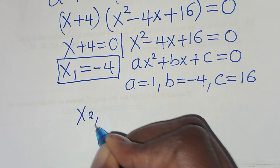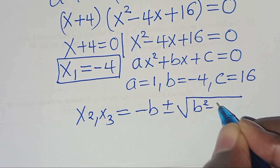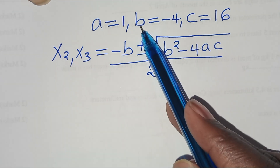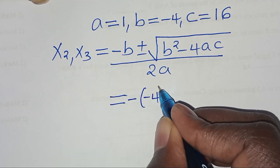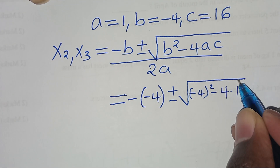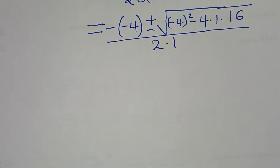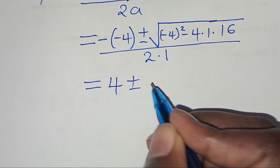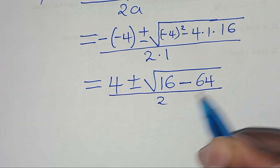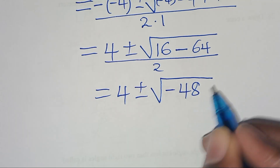To solve for x₂ and x₃, we apply the quadratic formula: (-b ± √(b² - 4ac)) / 2a. Substituting: (-(-4) ± √((-4)² - 4·1·16)) / (2·1) = (4 ± √(16 - 64)) / 2 = (4 ± √(-48)) / 2. We can express √(-48) as √(16 · 3 · (-1)).